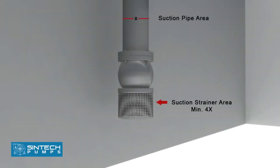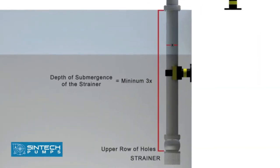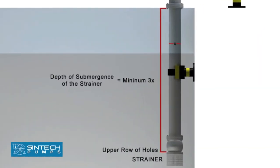The suction strainer must be at least 4 times the suction pipe area and the mesh size should screen out solid particles that would clog the impeller. The minimum depth of submergence of the strainer should be at least 3 times the pipe diameter measured from upper row of holes of strainer.